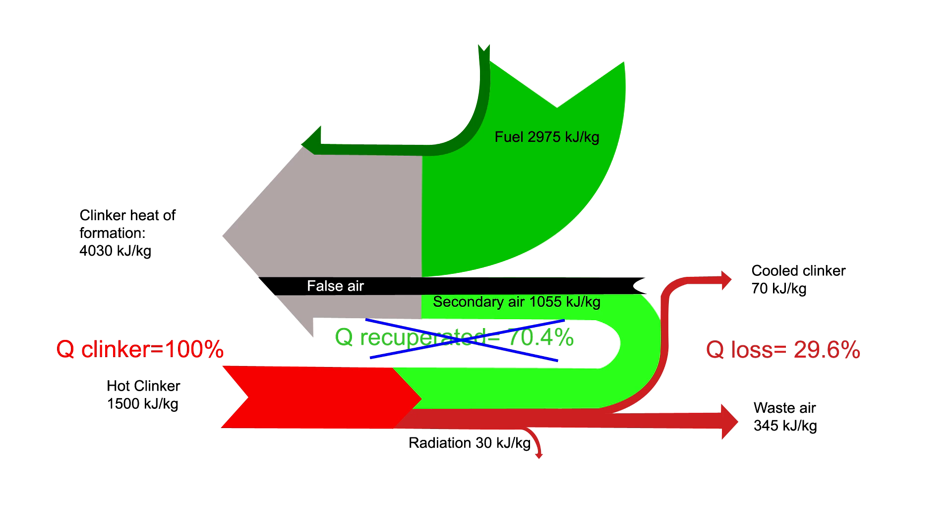And the waste air fan will have to suck out the excess hot air, which was displaced by the false air, to keep the hood pressure slightly negative. False air cannot be eliminated, but can be reduced. This is the first step to improving your cooler efficiency.